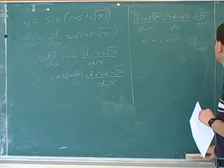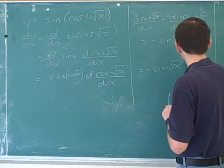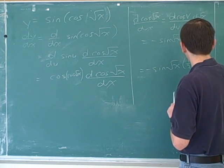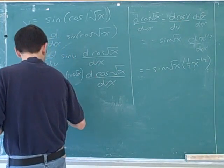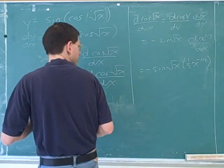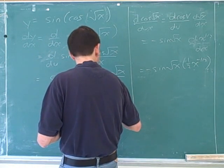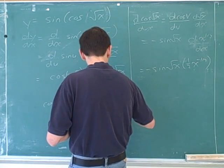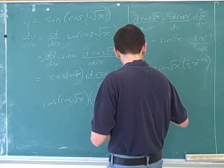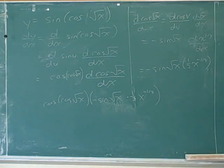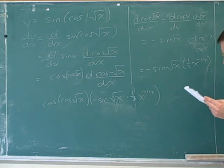And so we need to find the derivative of root x. Well, it's best to write that as x to the one-half. So that would be one-half x to the negative one-half. So overall, I've got cosine of cosine of root x times negative sine of root x times one-half x to the negative one-half. Does that look like what you got? Yep. Excellent.